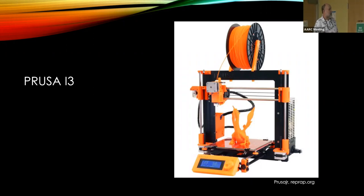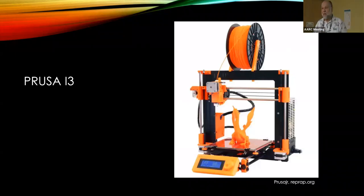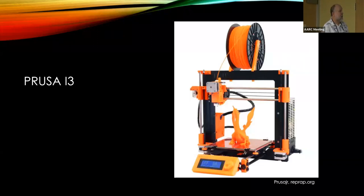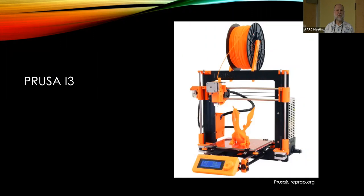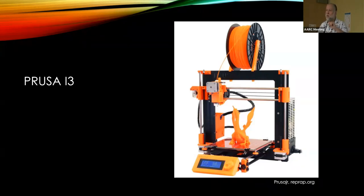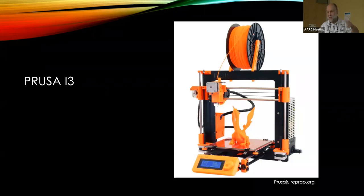The Prusa i3 was the granddaddy of consumer 3D printers for a long time, designed by a guy named Prusa. It's what's referred to as a RepRap printer — RepRap stands for replicating rapid prototyper. The goal of a RepRap printer is for it to be able to print itself. Most don't quite get there — you've got some metal screws, stepper motors, and stuff the printer can't print.